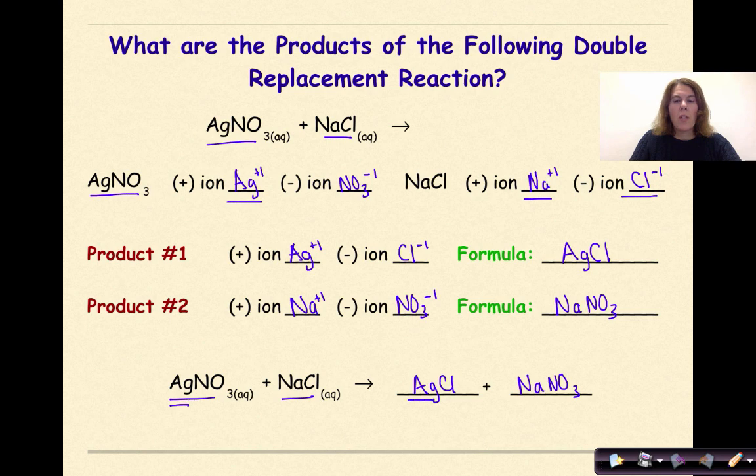One Ag, one Ag, one nitrate ion, one nitrate ion represented on the product side, one sodium ion, one sodium ion, and one chlorine ion, and finally another chlorine ion. So this is a balanced reaction so we don't need to do anything further.